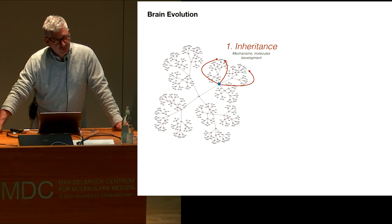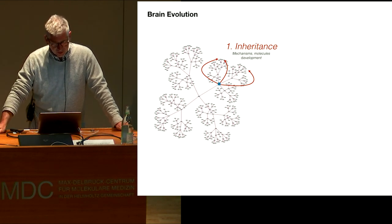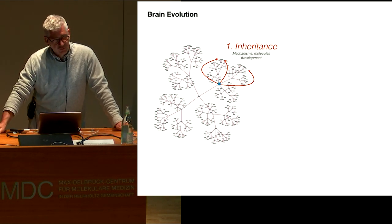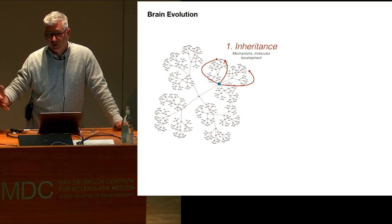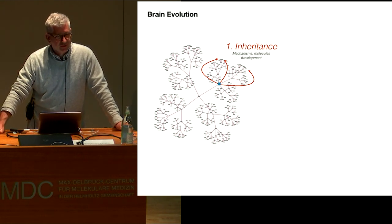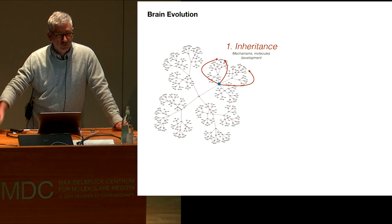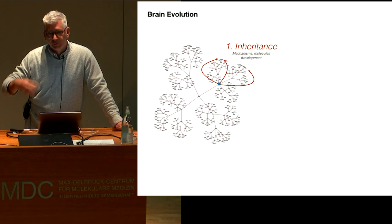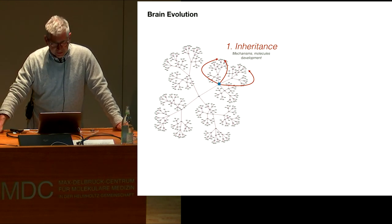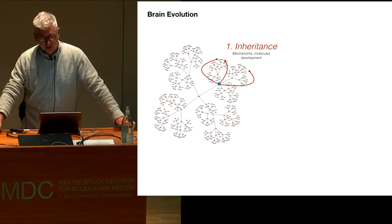When you bring in evolution in neuroscience, there are at least two ways of exploiting what you can get from this type of understanding. The first one is to look at the past to explain the present, and exploit this principle of inheritance of what's been developed and invented and evolved earlier. This applies mostly to mechanisms, to molecules, developmental processes, and so on, and illuminates our understanding of structures as we can study them today.